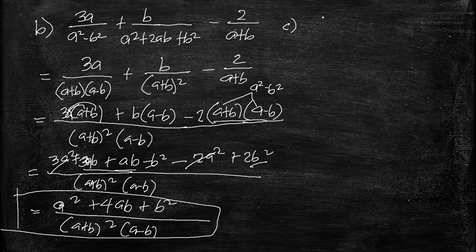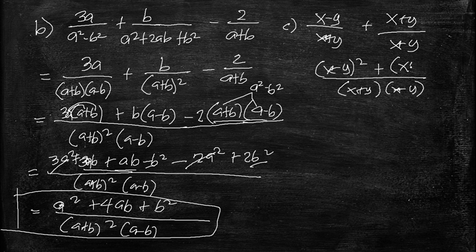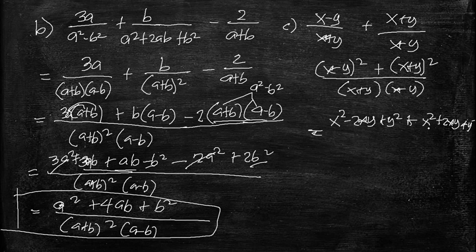For letter C, the expression is (x minus y) over (x plus y) plus (x plus y) over (x minus y). The LCD is (x plus y)(x minus y). Dividing gives remainders: the first fraction gets multiplied by (x minus y), giving (x minus y) squared; the second gets multiplied by (x plus y), giving (x plus y) squared. Expanding using special products: x squared minus 2xy plus y squared, plus x squared plus 2xy plus y squared.